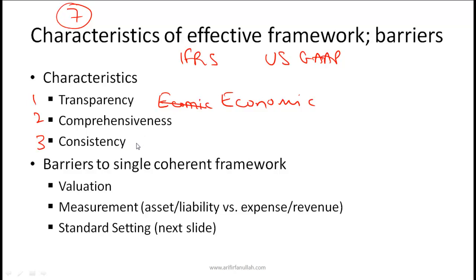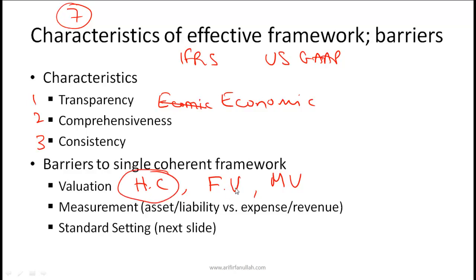What are the barriers to a single coherent framework? One barrier is valuation. When you value assets and liabilities there are different ways of doing this — you can value based on historical cost, current fair value, market value, etc. Historical cost says you value an asset based on how much you originally purchased it for, while fair value and market value say you value based on current fair value or current market value. Different frameworks might disagree on the appropriate valuation method for different kinds of assets and liabilities.